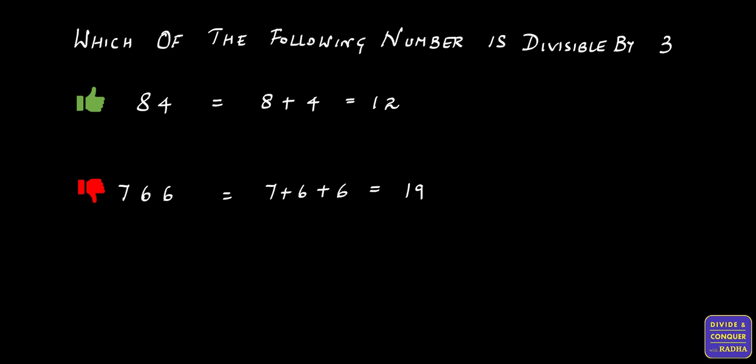4,995. The sum of the digits is equal to 27. 27 is divisible by 3. Therefore, 4,995 is divisible by 3.